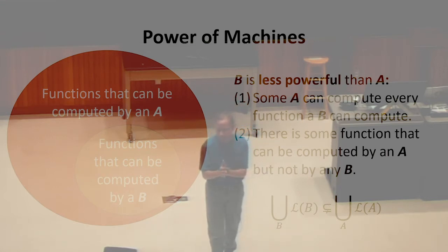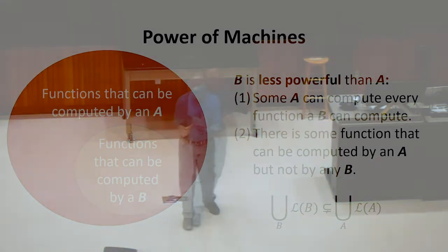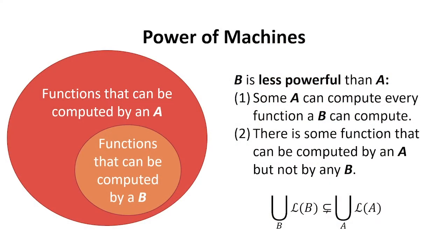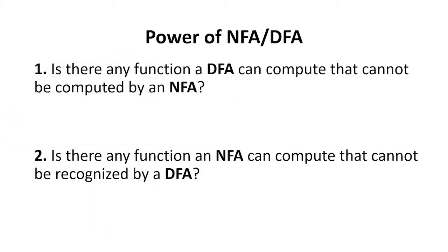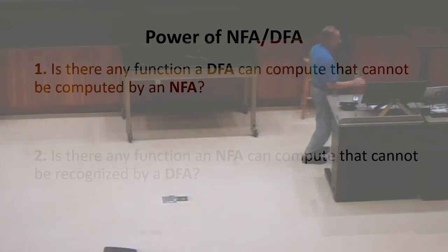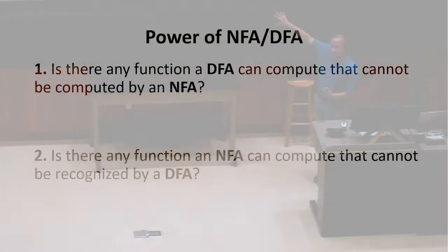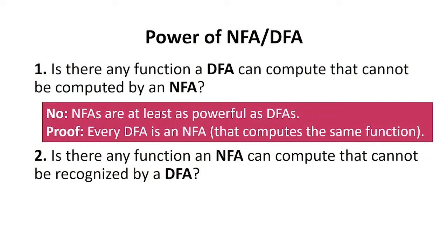The non-deterministic machine seems potentially more powerful. Every deterministic state machine can be interpreted as a non-deterministic one — it's just one where there are never any choices. So we're potentially only adding power, not losing it. But it could be that they're the same — that every function computable with a non-deterministic finite state machine also has an equivalent deterministic machine. The proof that every DFA can be simulated by an NFA is that it already is one.